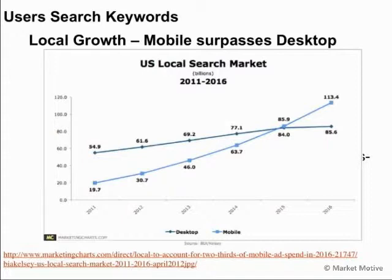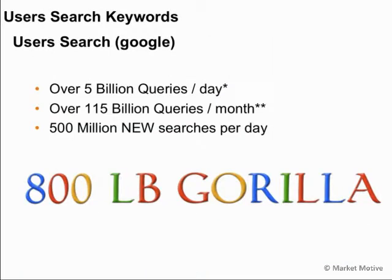There are now more people searching on mobile than on desktop locally. Users search almost exclusively on Google, which has 70-80% market share. When we talk about SEO, most times we're talking about Google. They serve over 5 billion queries per day — that's over 115 billion queries per month. And of those 5 billion queries per day, around 15% are new searches, meaning something that's never been searched for before.